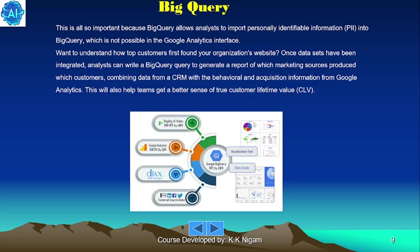Want to understand how top customers first found your organization's website? Once data sets have been integrated, analysts can write a BigQuery query to generate a report of which marketing sources produced which customers — combining data from CRM with the behavioral and acquisition information from Google Analytics. This will also help teams get a better sense of true customer lifetime value (CLV).